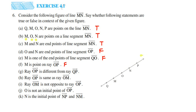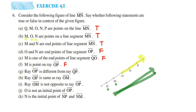The next statement is: ray OP is different from ray QP. Ray OP is here and ray QP is here. In ray OP there are no points M and Q, whereas in ray QP there are points Q and M. So yes, they are both different. The statement is true — they are not the same.